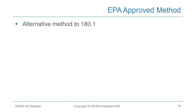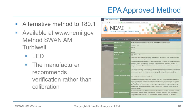Swan's method is an alternative to EPA Method 180.1, available at nemi.gov. It is an alternative method because it uses an LED light source, and the procedure calls out that the manufacturer recommends verification rather than calibration.